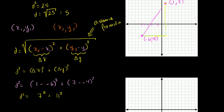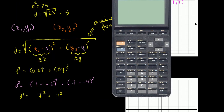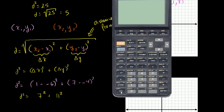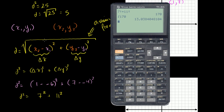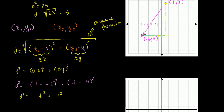Let me take the calculator out. 7 squared plus 11 squared equals 170. So d squared equals 170, and the distance is the square root of 170, which is roughly 13.04. So this distance right here is 13.04. Hopefully you found that helpful.